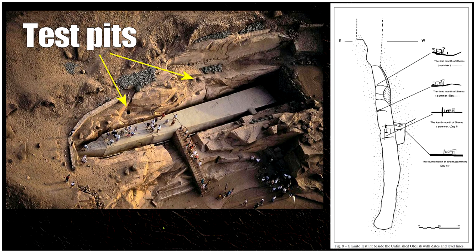There's the unfinished obelisk and there are two test pits right next to it — I'll link the paper. What's interesting is that in this test pit, in dynastic Egyptian writing, there is a marker: the first month of Shamu, or Shemu — the season of harvest. During the flood season there's a lot of free labour because everything was flooded, but during the season of Shemu their labour would be needed, indicating that work was going on all year round.